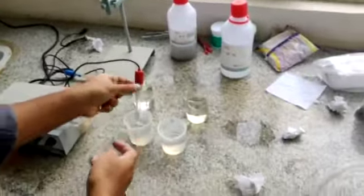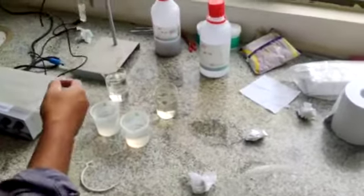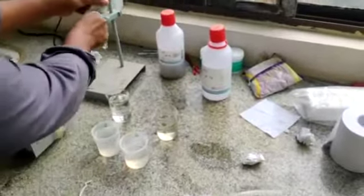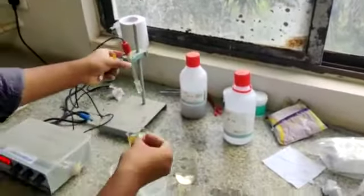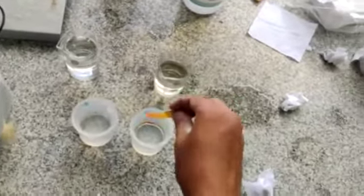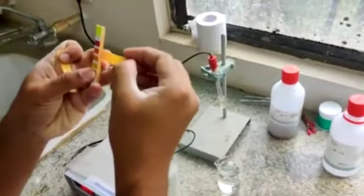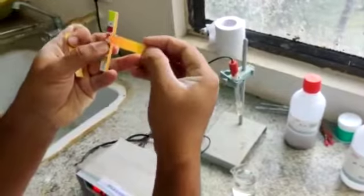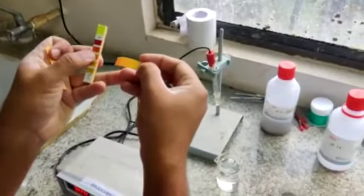So you just have to dip it to the sample. Dip it here. It will show the color change. See it is completely turning red so what it means is acidic. See, it is turning into this color 3 to 5 means it is 4 so it is an acidic solution.